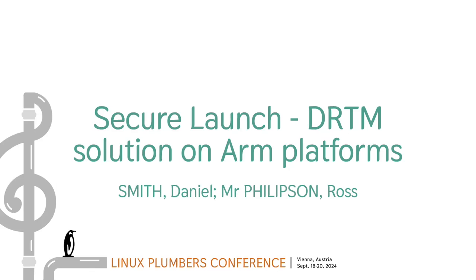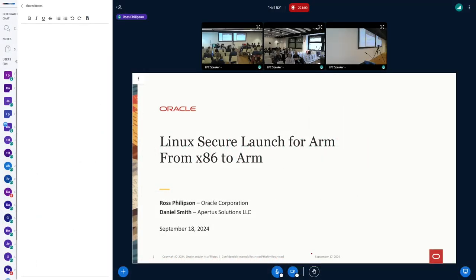My name is Ross Phillips and I work for Oracle Corporation. Daniel Smith, my co-presenter, is also in the session. I don't have a lot of time so I'll get right into it. What I'm going to be talking about is our current secure launch efforts for ARM. To this point we've been doing exclusively x86, but we're now moving to implementing a dynamic root of trust measurements solution on ARM too, using much of the same framework.